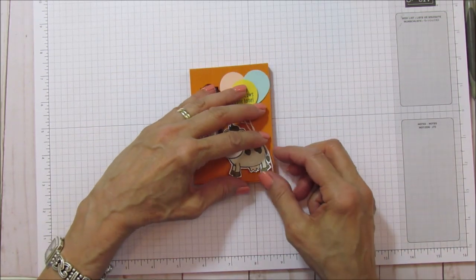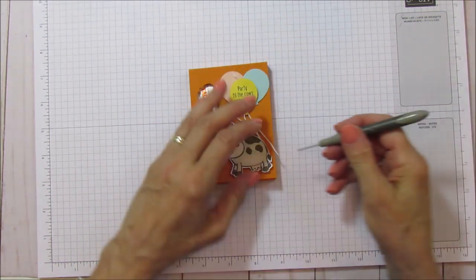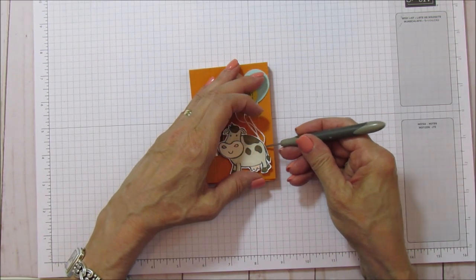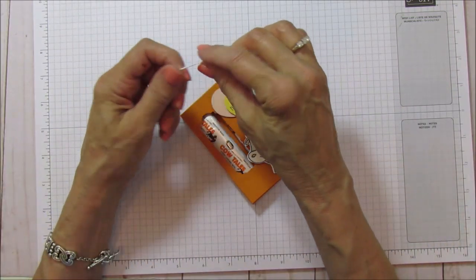And then this one we're popping up with a dimensional right in the center. I'm going to cut that a hair shorter. That was a little bit too long. I'm going to stick that right where that glue dot is.